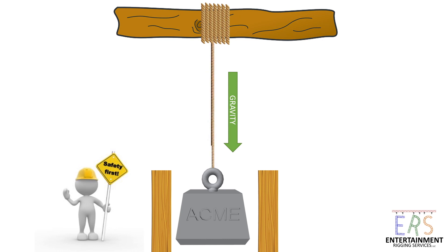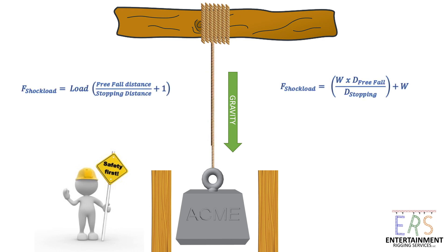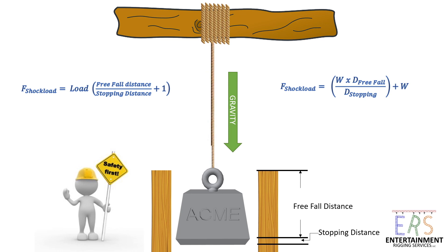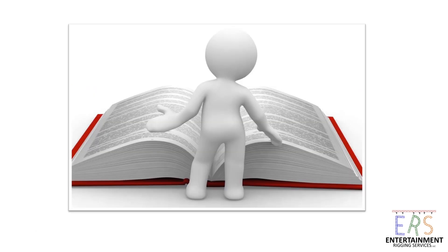There are two common ways you might see the shock load equation written; they both get the same answer, so use whichever you prefer. We need to know three things to use the equation: our load weight, free-fall distance, and stopping distance. These equations are different from those used for regular dynamic loads — they use the weight of the load, which has the acceleration of gravity already built in, which is why no unit of time is needed to solve the equation.